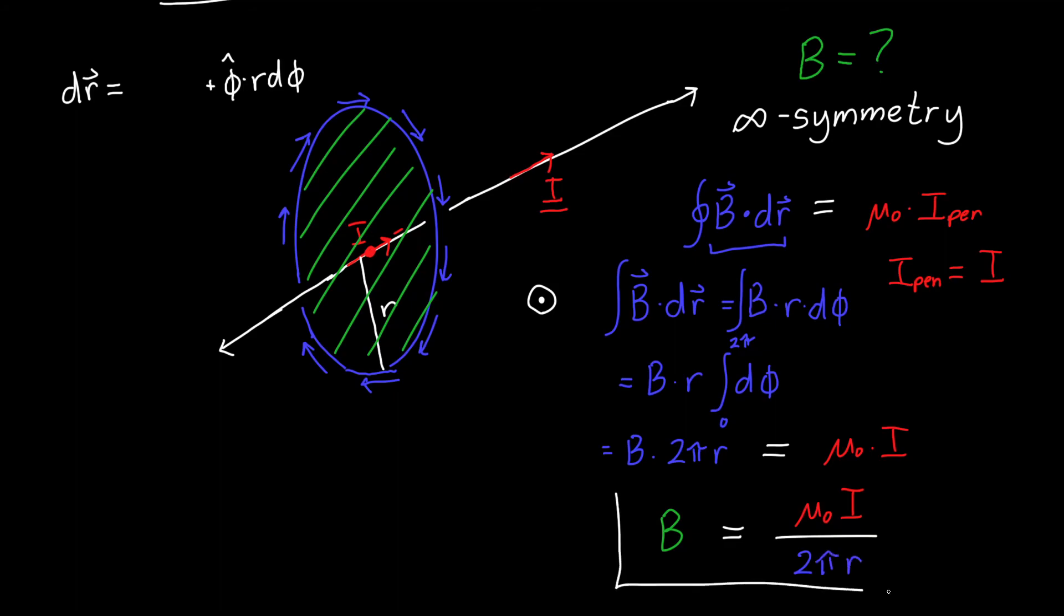We'll get that B is equal to mu naught I divided by 2 pi r. This is the magnitude of our magnetic field at some distance away from our wire r. If we wanted to turn this into a vector, we could do that by adding a phi hat to indicate that it's circling around in the angular direction. That's not strictly necessary, at least in intro physics. You can usually just work with magnitudes of B fields and then use the right hand rule to figure out what direction it's pointing.